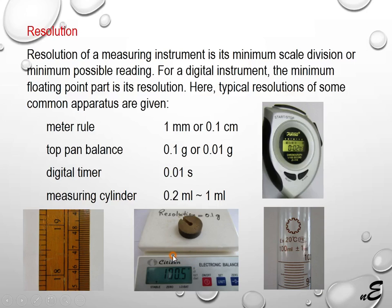For analog instruments: here is a meter rule and a measuring cylinder. From 90 ml to 100 ml there are 10 divisions, so each smallest division equals 1 ml. The resolution of the measuring cylinder is 1 ml. For the meter rule, 1 centimeter divided by 10 gives a division of 1 mm, so the resolution is 1 mm.